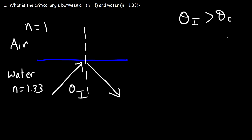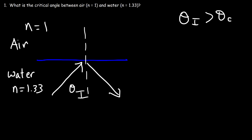If the incident angle is less than the critical angle, we're going to have refraction and partial reflection. But if the incident angle is greater than the critical angle, then we have total internal reflection. So let's work on this example.